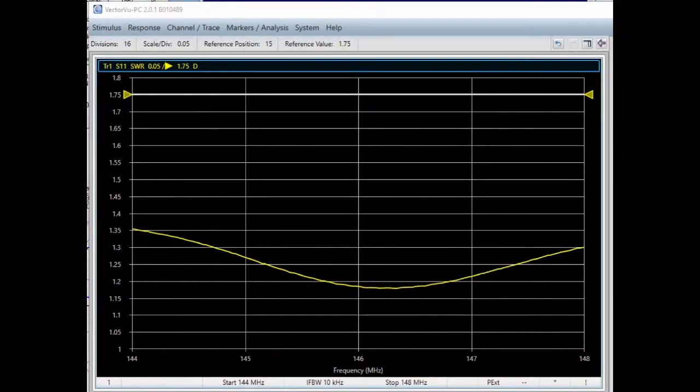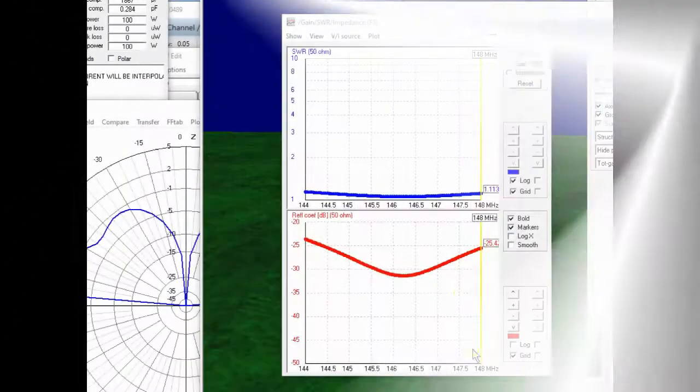And this is the response of that old antenna. You can see 1.35 to 1 down to somewhere between 1.15 and 1.2 to 1 up to about 1.3 to 1 across the entire 2 meter amateur radio band. So it's a little bit different than what we were expecting based on the simulation.